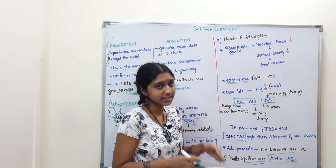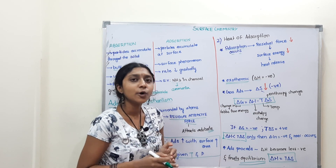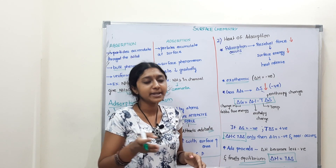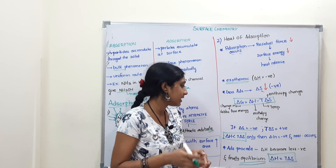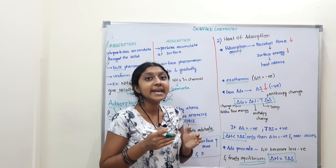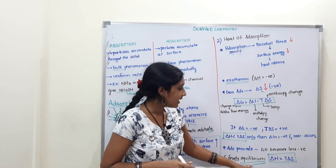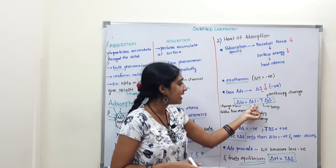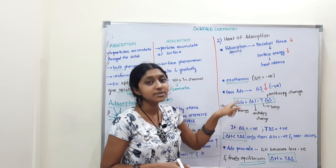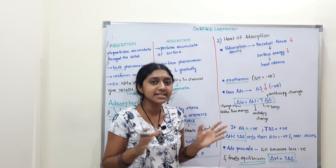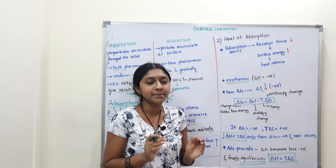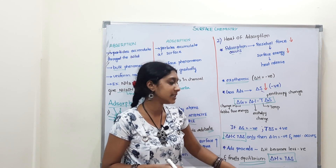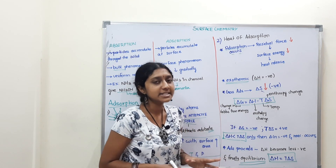As adsorption proceeds, ΔH becomes less negative — for example, from −10 to −5 to −4. After some time, we reach equilibrium where ΔH equals TΔS, which means ΔG equals zero. At this point, Gibbs free energy change is zero and the reaction reaches equilibrium. So adsorption stops at equilibrium when ΔH = TΔS.